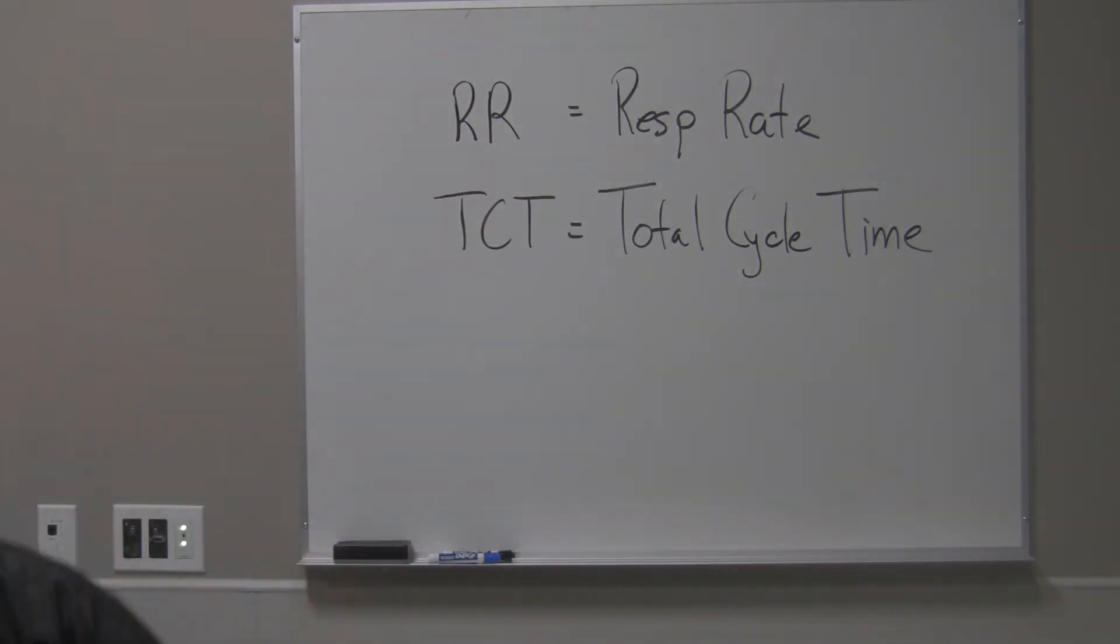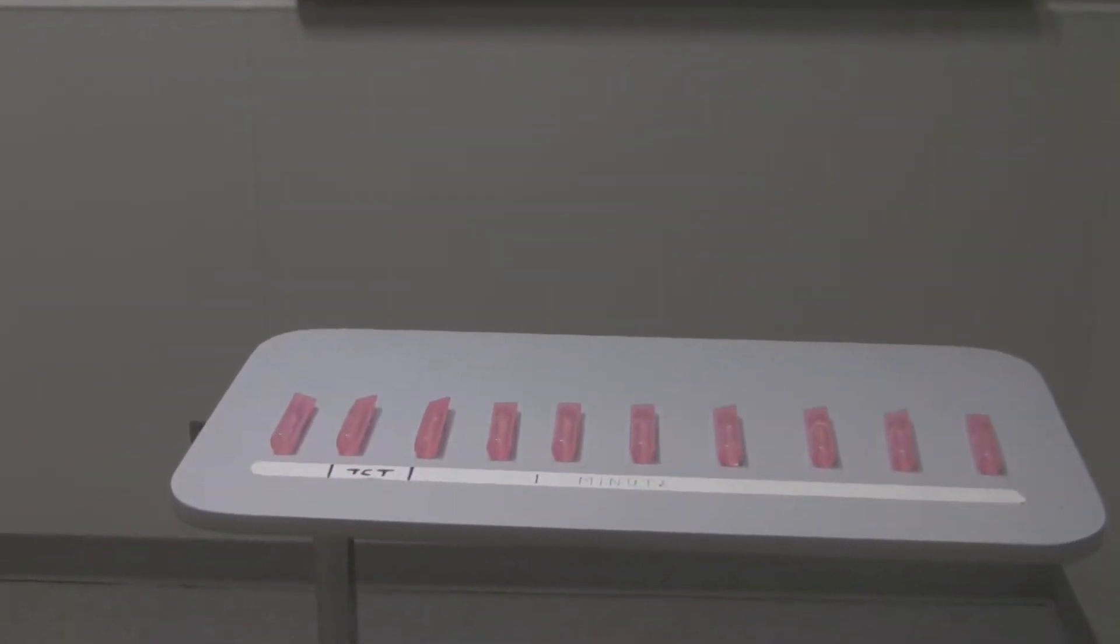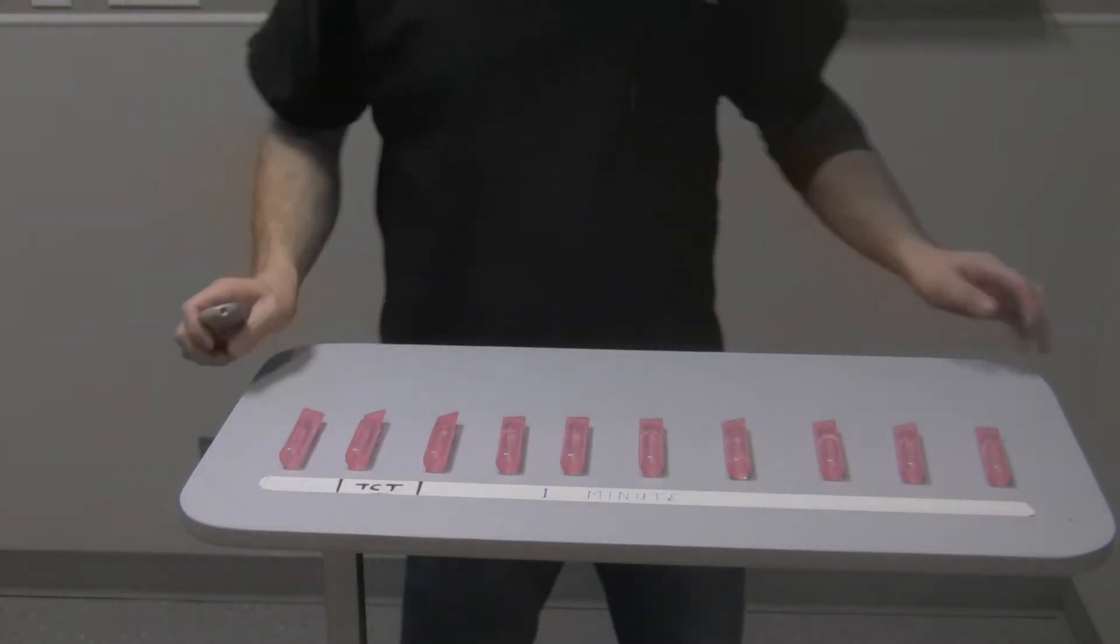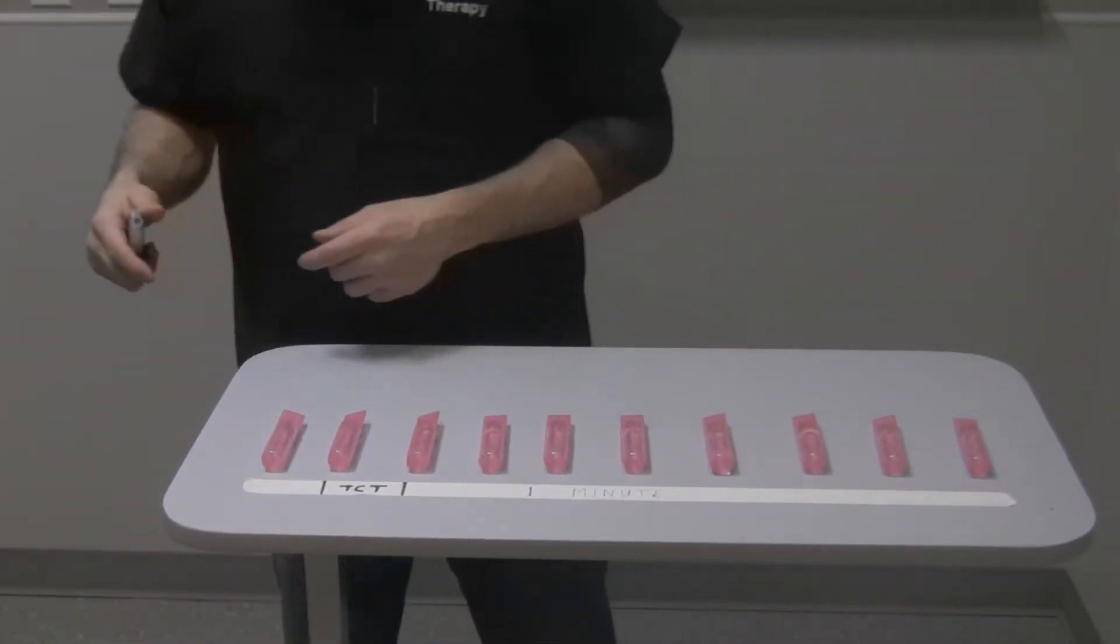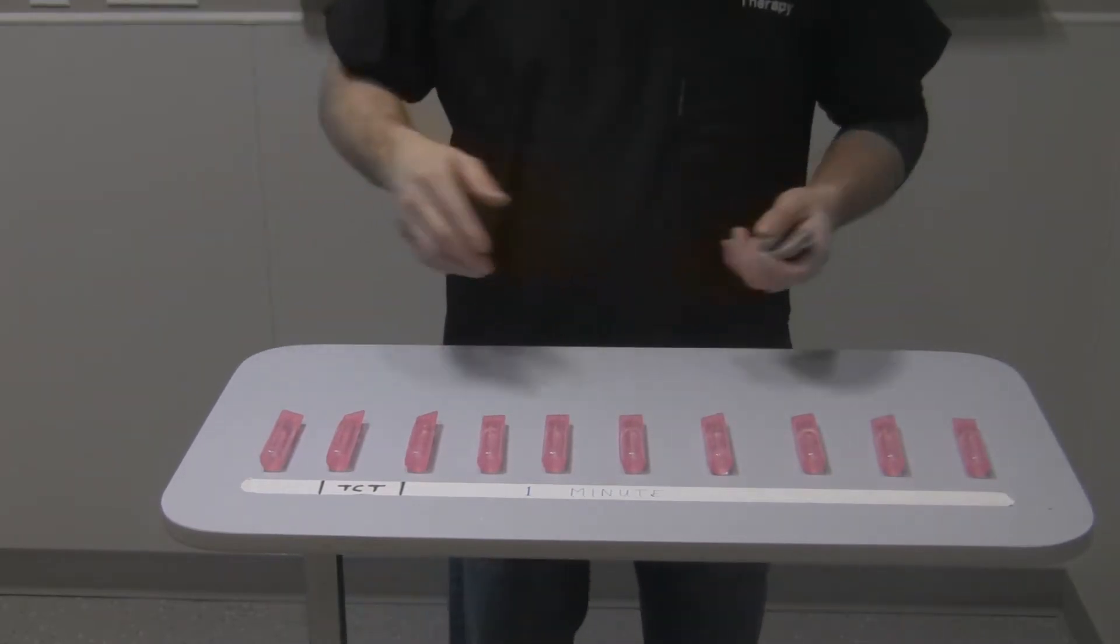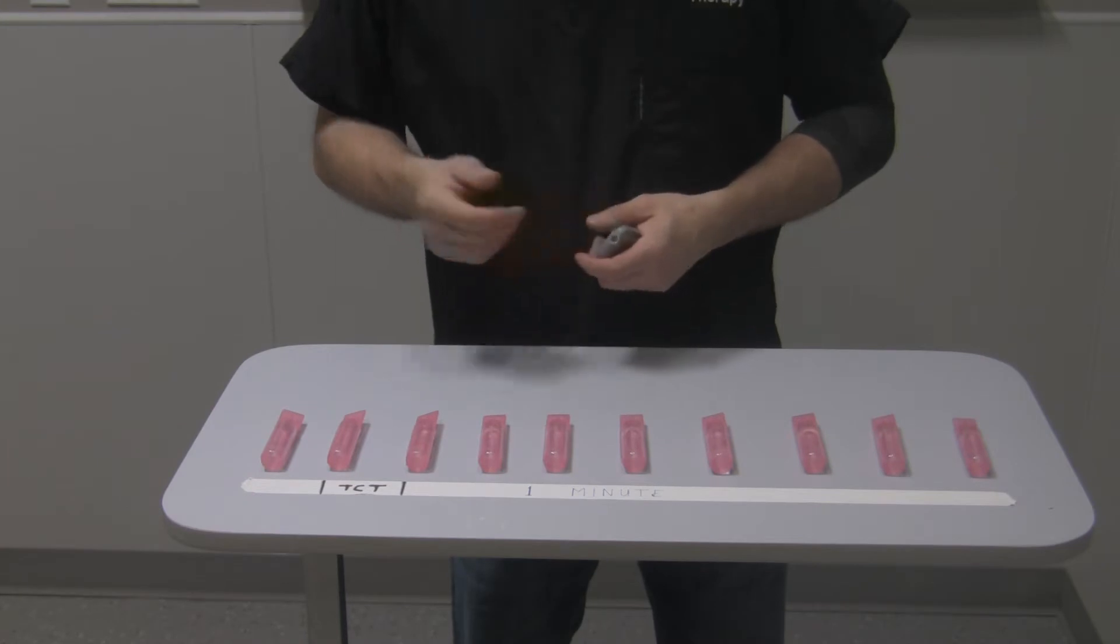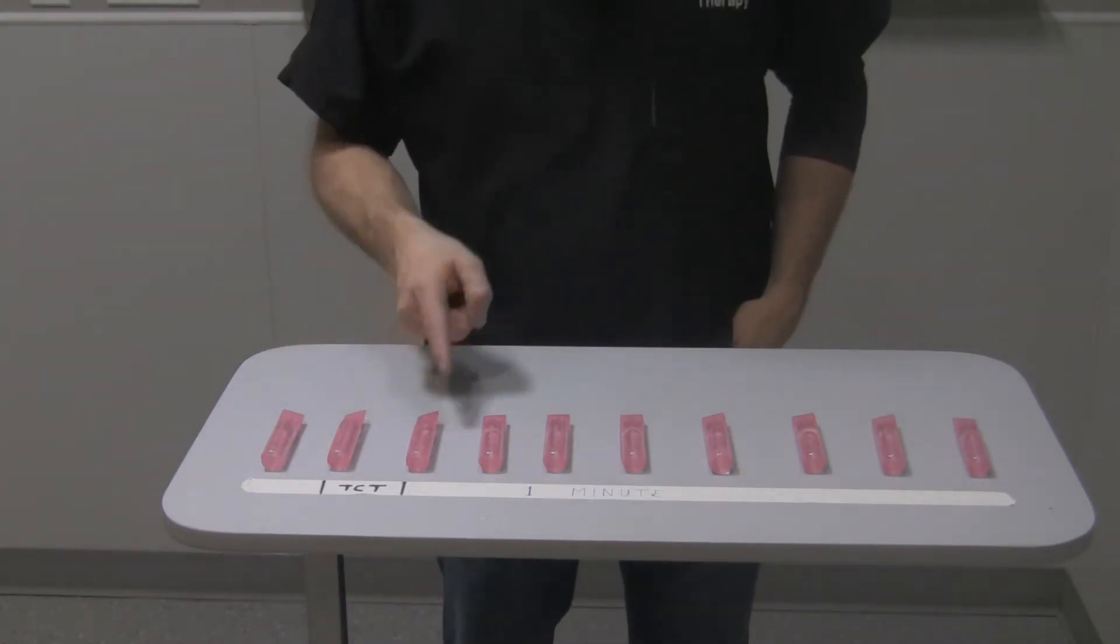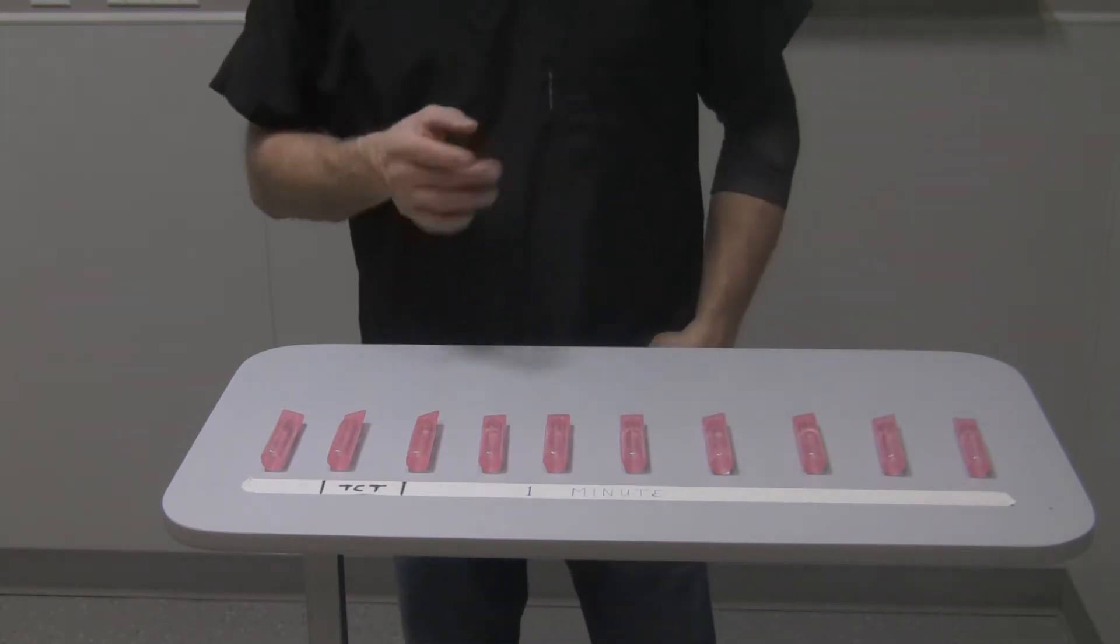So I want to show you on the table again, the same concept using this table and the tape and the pinkies, these pink things here. The tape represents one minute in duration. So we can see in this particular example, the patient took one, two, three, four, five, six, seven, eight, nine, ten breaths in one minute.